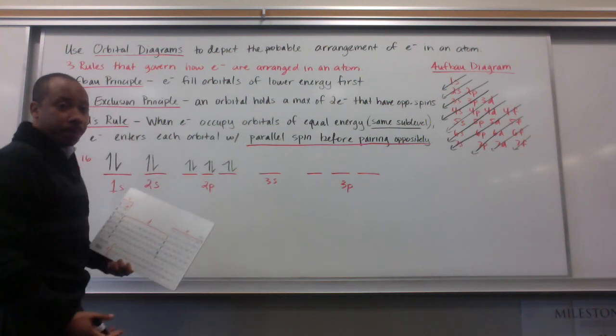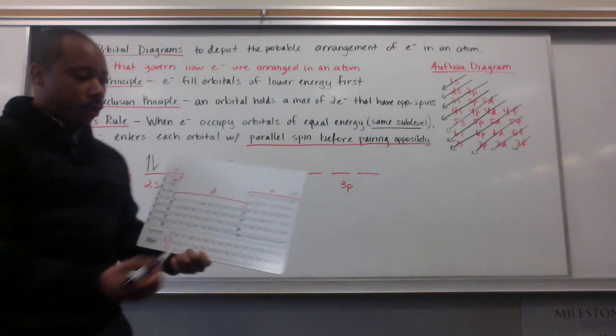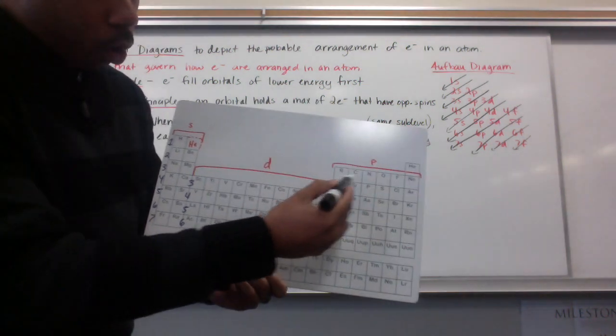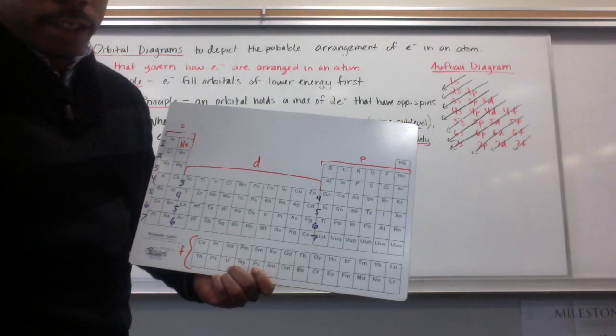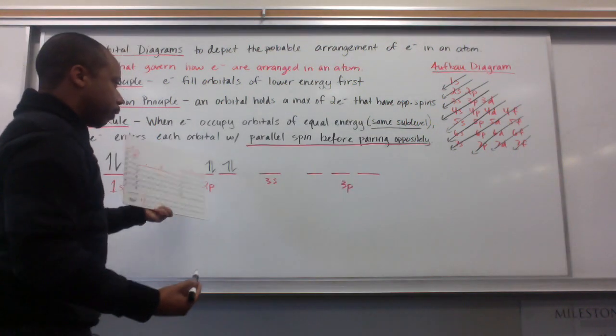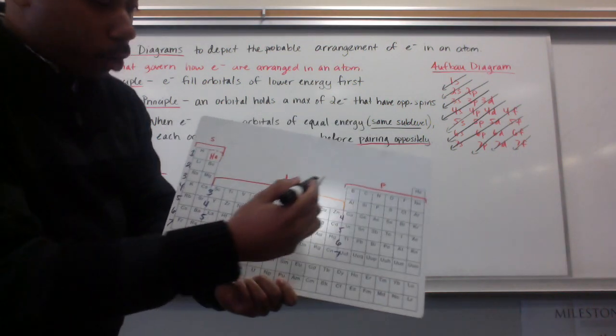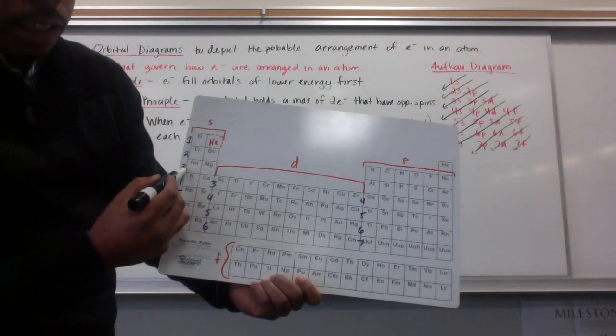If I'm going through the entire p-block, which in this case, I am, I'm going from boron all the way to neon. And if you count, that's six different elements, accounting for six different electrons here. And then I go to energy level 3s, because I'm about to end the line in two.